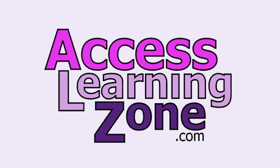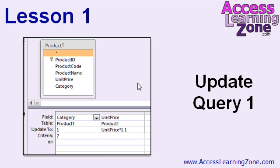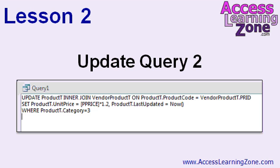Let's take a minute to go over exactly what's covered in each lesson of this seminar. In Lesson 1, we'll learn about update queries. We'll build an update query using the classic Access query designer, and then we'll see how the SQL for an update query works. In Lesson 2, we're continuing on with update queries — we'll see how to run an update query that joins data from multiple tables.